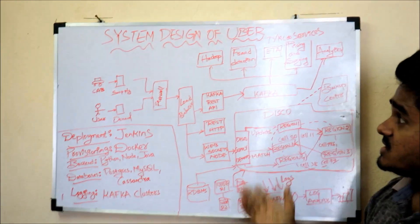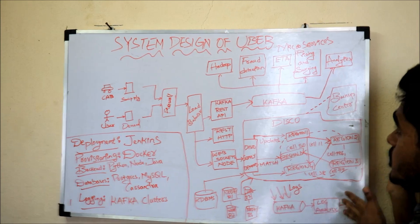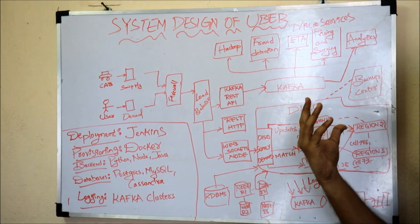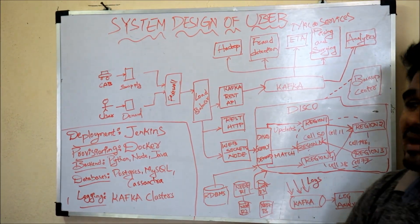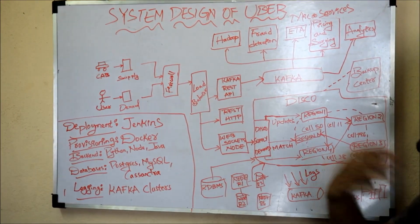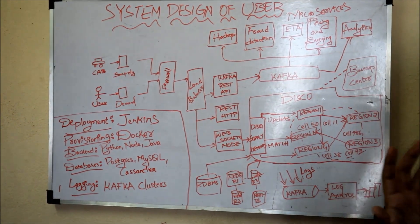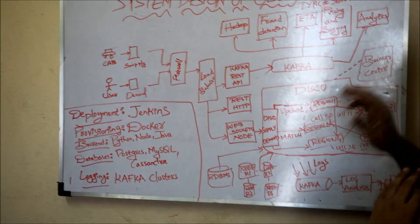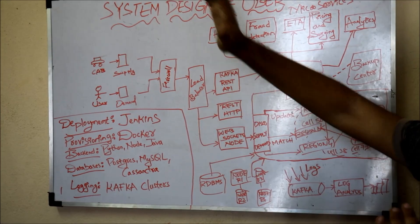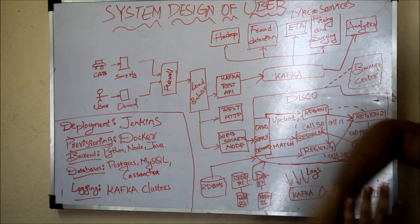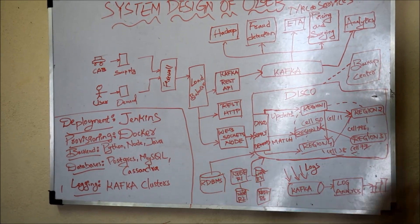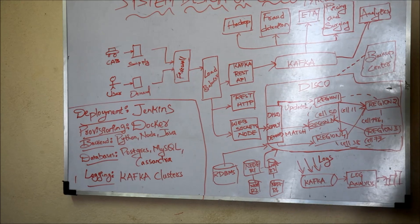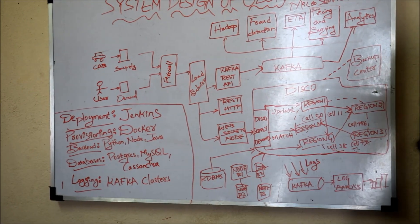This is the system design of Uber. Initially Uber followed monolithic architecture, but nowadays it is transitioning into microservice architecture. Microservices is nothing but dividing the entire project into different modules and working on each independently. If you want to know more about microservices, watch my previous video for a more detailed explanation.